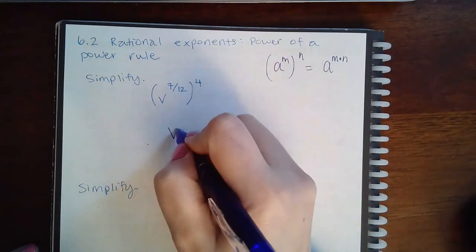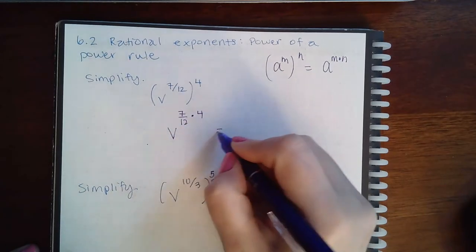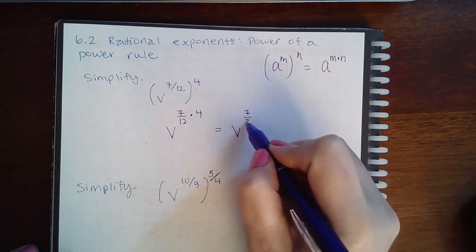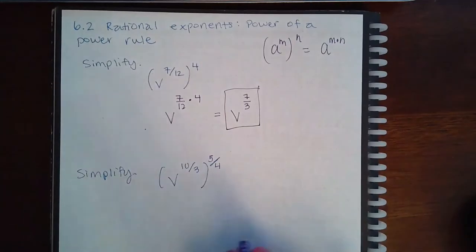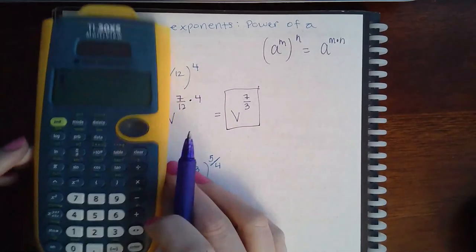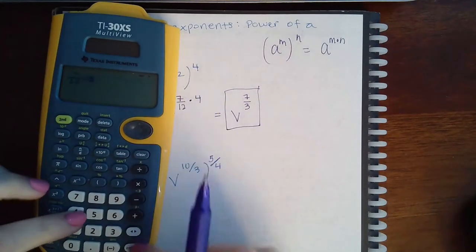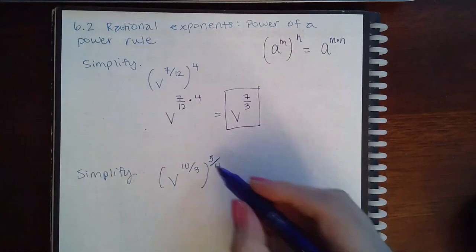In this case, I have v and I need to take 7/12 times 4, and that will actually reduce into 7/3. So this would be my final response. If you're ever not sure, you could just do 7/12 times 4 in the calculator and it'll reduce it for you: 7/3.